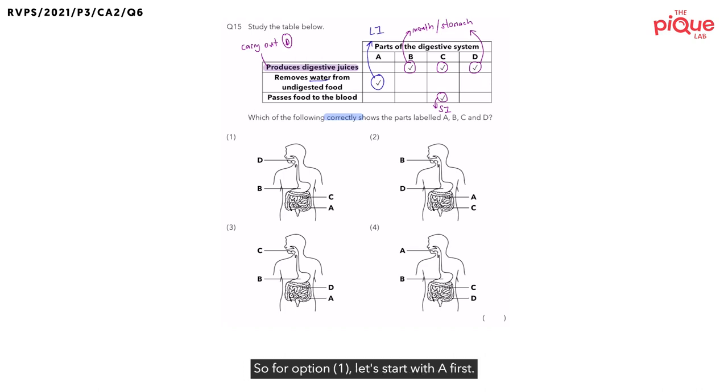So, for option one, let's start with A first. Remember, A is supposed to be which organ? A is supposed to be the large intestine. So, if you look at option one, did they label A as the large intestine? Yes. So, option one is possible.